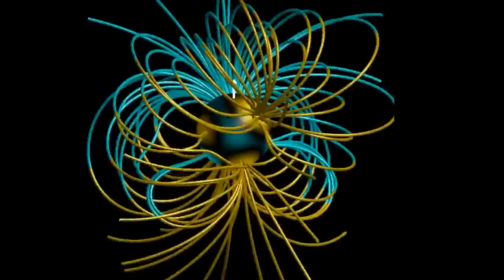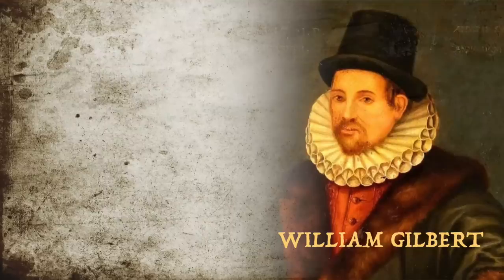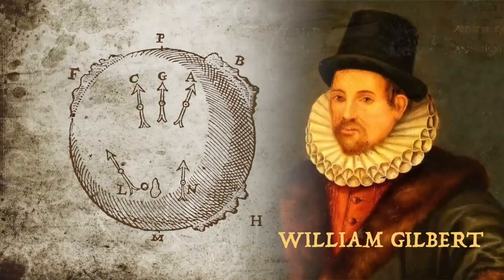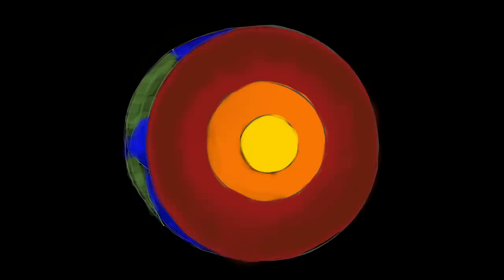Some of the first scientists to study this, starting with William Gilbert in 1600, proposed that the Earth was a huge permanent magnet. Now today, we know that the inner core of the Earth is solid, and it's mostly made up of iron and nickel, which are ferromagnetic elements.